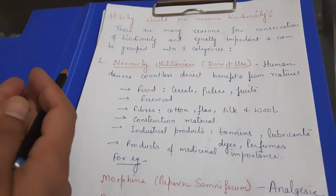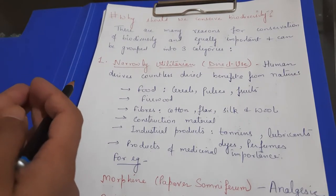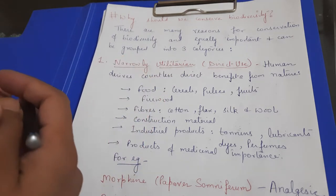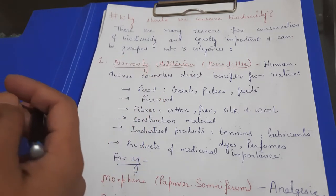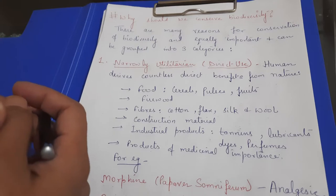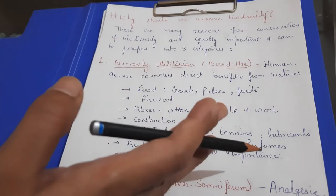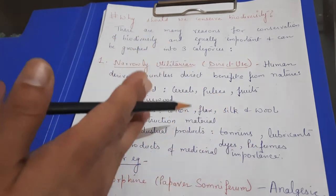So students, here in this session we are going to discuss why should we conserve biodiversity. We have discussed in our last session the various causes of loss of biodiversity. There are many reasons for biodiversity loss. There are four major causes that we have discussed.